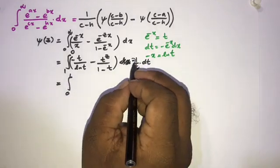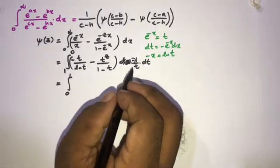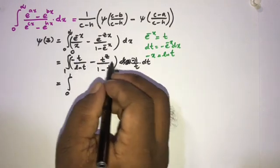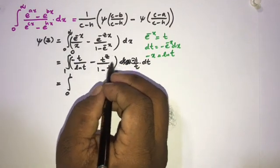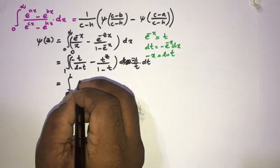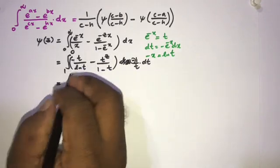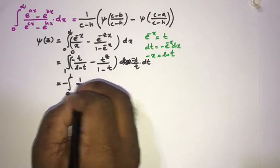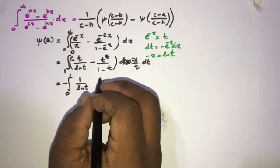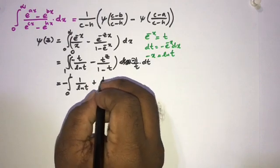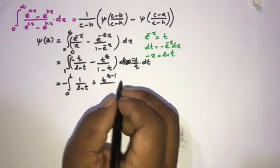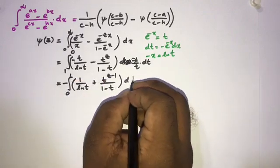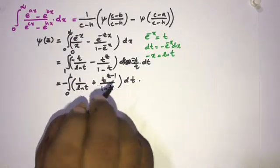When we change the limits the minus gets cancelled. Multiplying by 1/t cancels the t, and we get t^(c-1). Taking the minus sign as a common factor, we arrive at: minus the integral from 0 to 1 of [1/ln(t) + t^(c-1)/(1-t)] dt. This is an interesting fact.